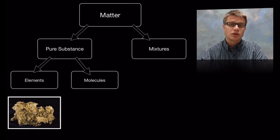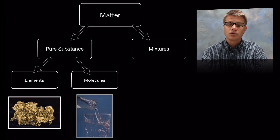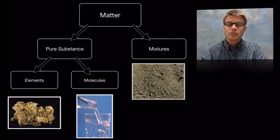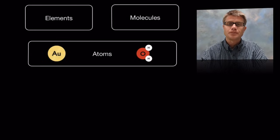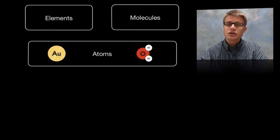So an example of an element could be pure gold. An example of a molecule could be water. And an example of a mixture could be dirt. If we take those elements and molecules, they're each made of atoms. In other words, gold is just going to be made of those gold atoms, and then water is just going to be made up of oxygen and two hydrogen atoms.